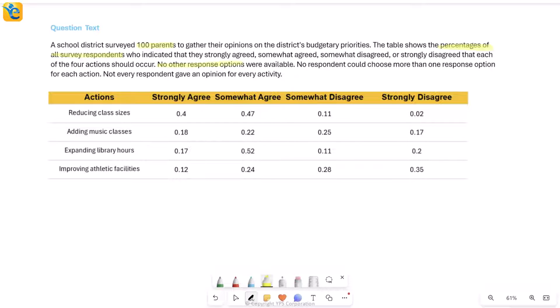It tells us no other response options were available - nothing outside these four options. Also, no respondent could choose more than one response option, which means if a parent selected strongly agree for reducing class sizes, they cannot also select somewhat agree. One option for one action item. And not every respondent gave an opinion for every activity.